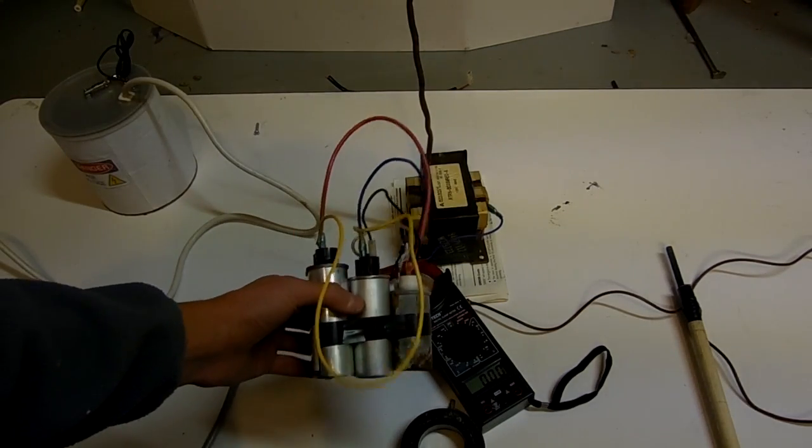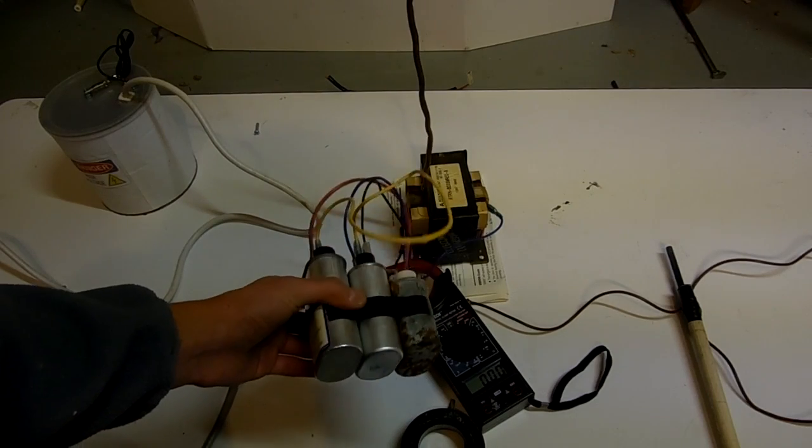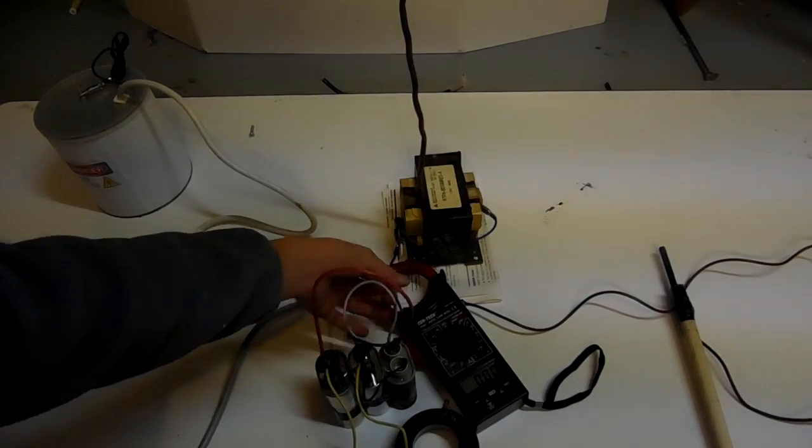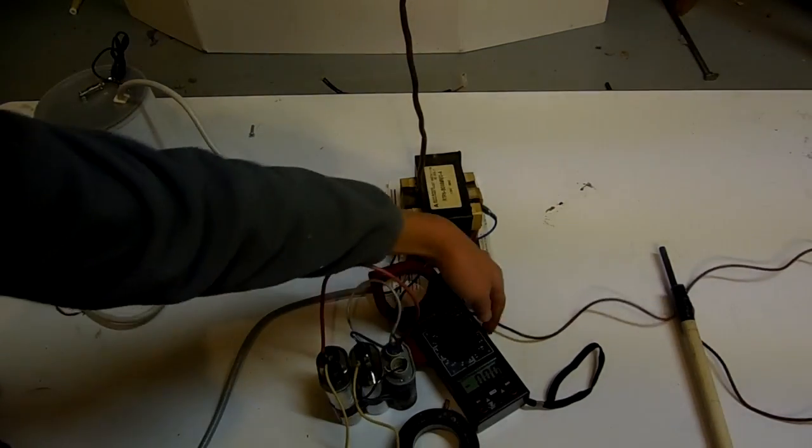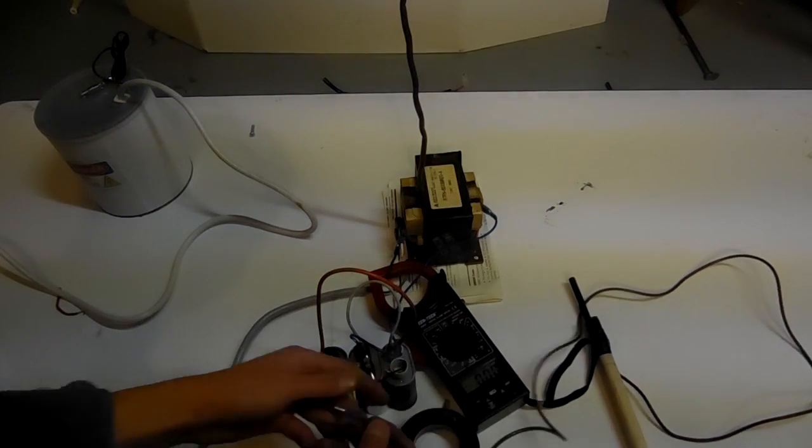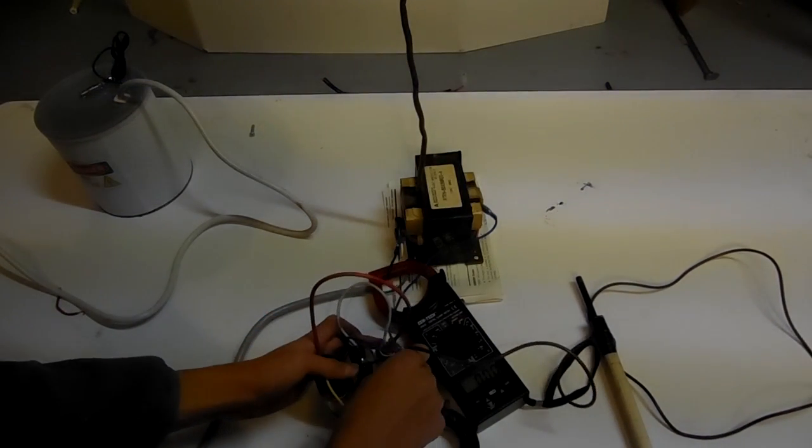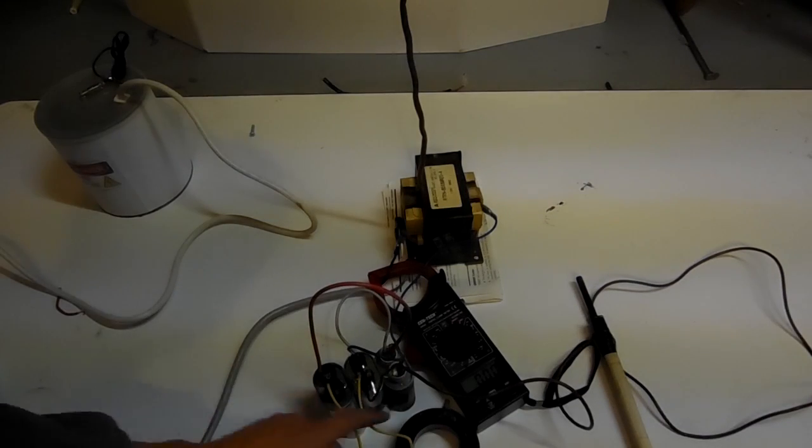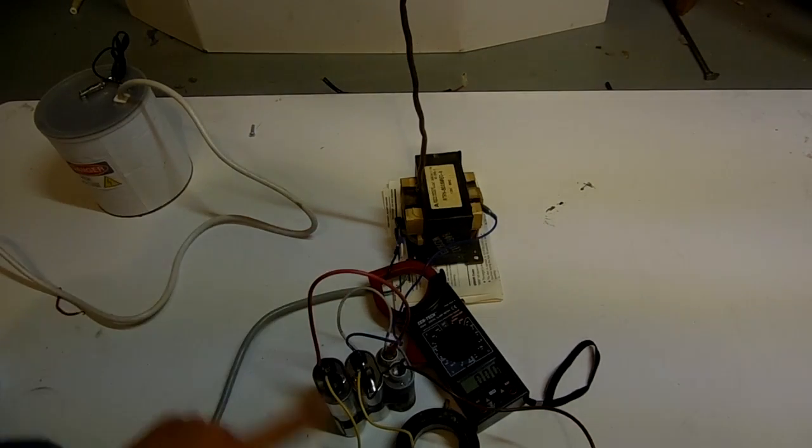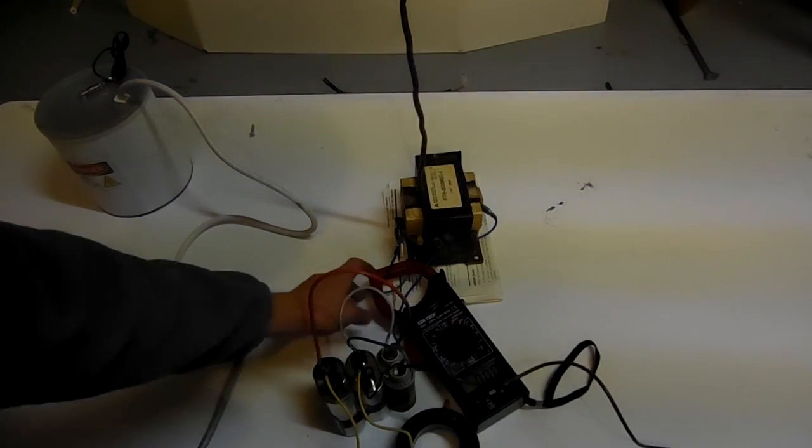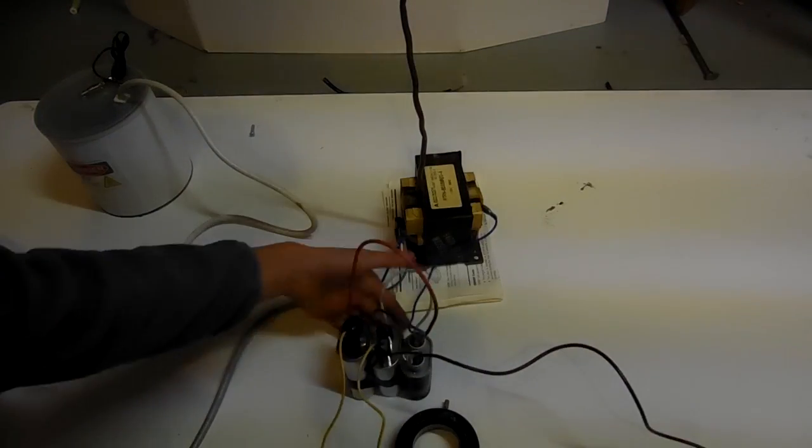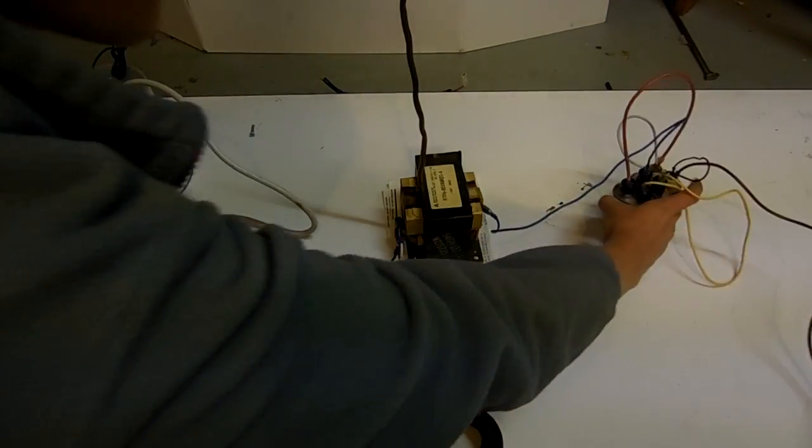One side of the capacitors are connected to the MOT. This is about three microfarads of capacitance at around 2,100 volts. Now you connect your chicken stick to the other side of the capacitor bank. The side on the MOT is this side of the capacitors, and the side on my chicken stick is this side.